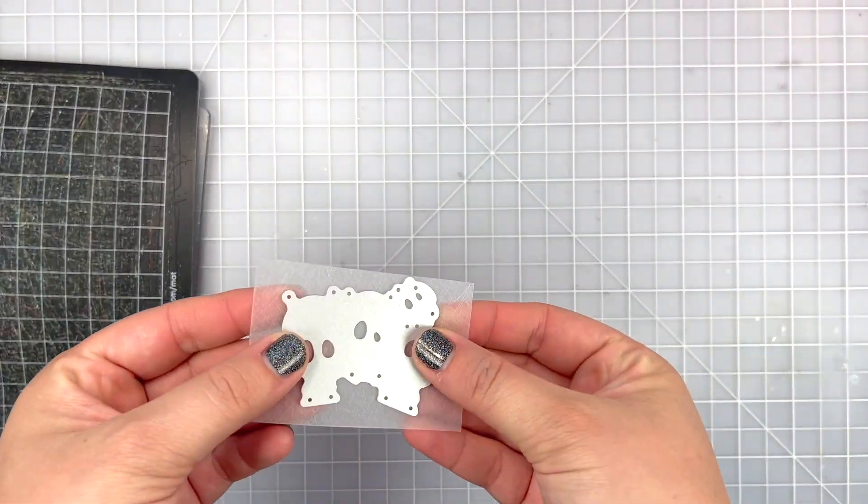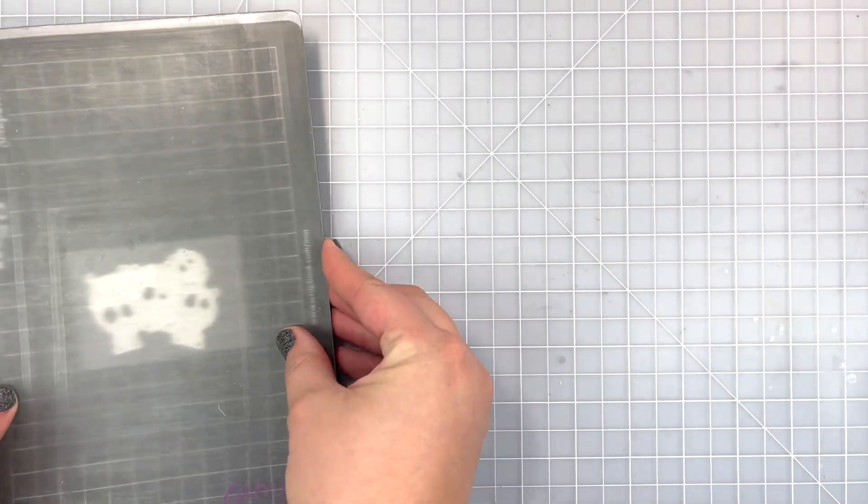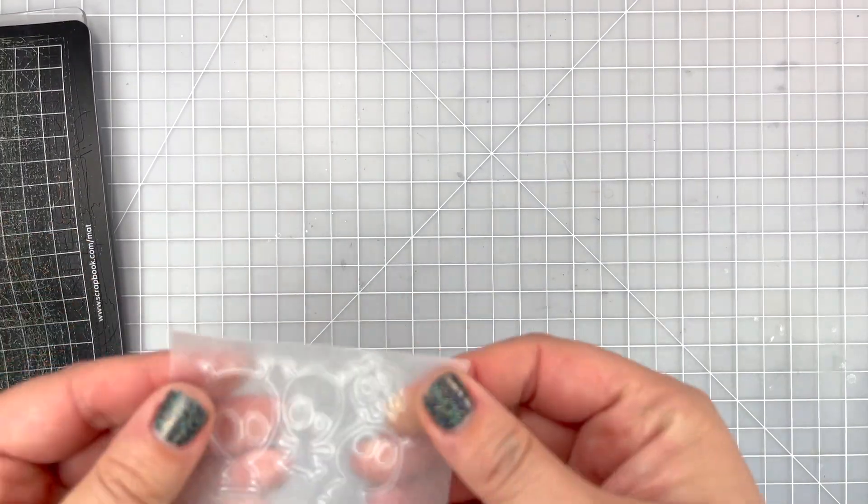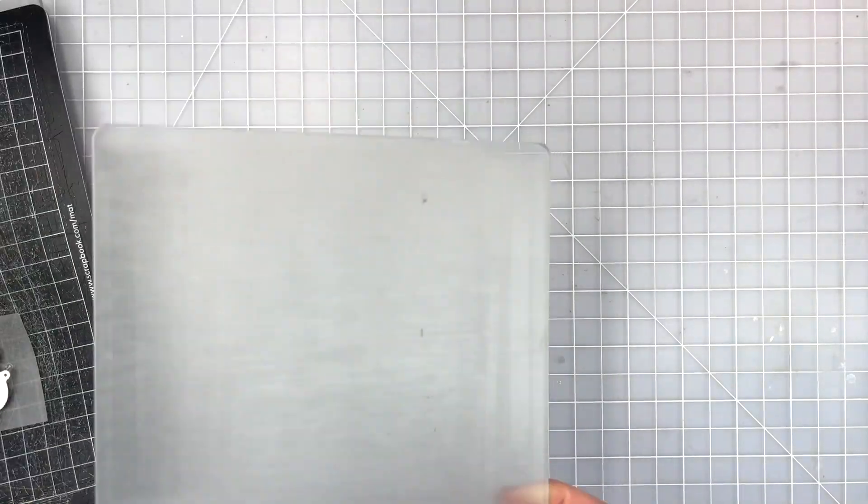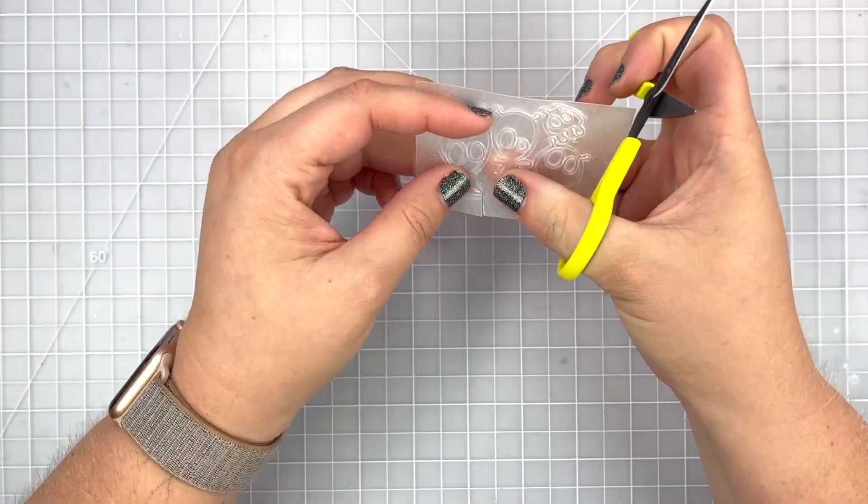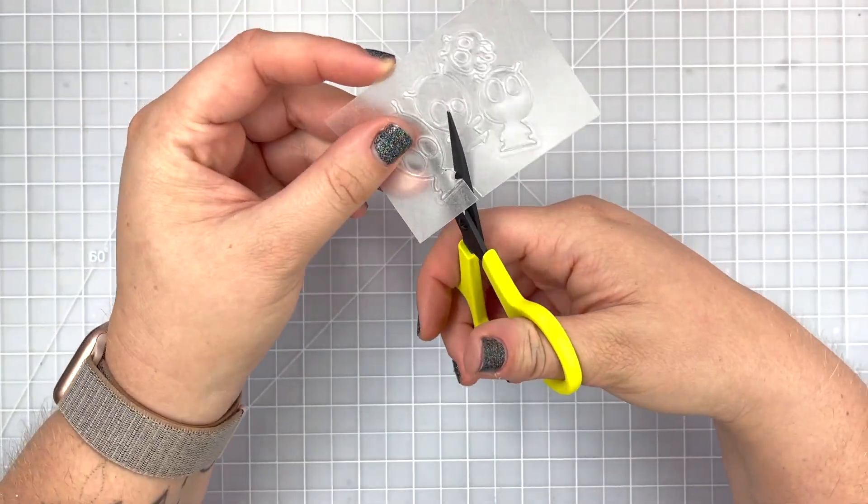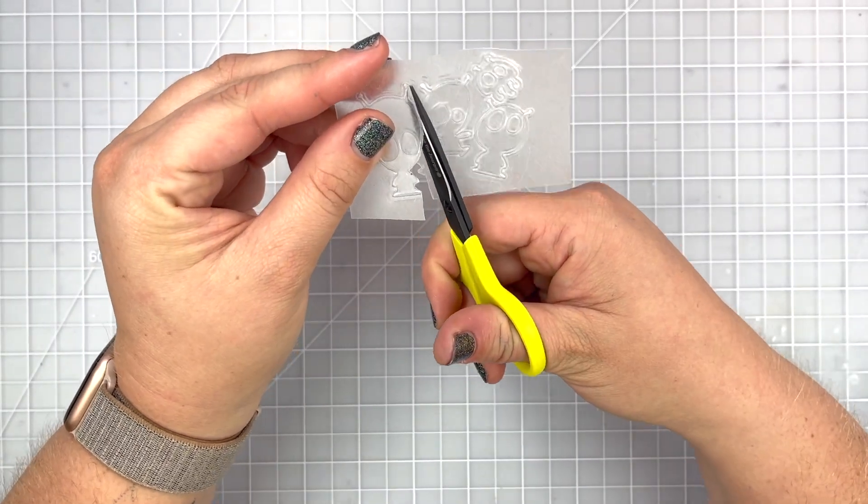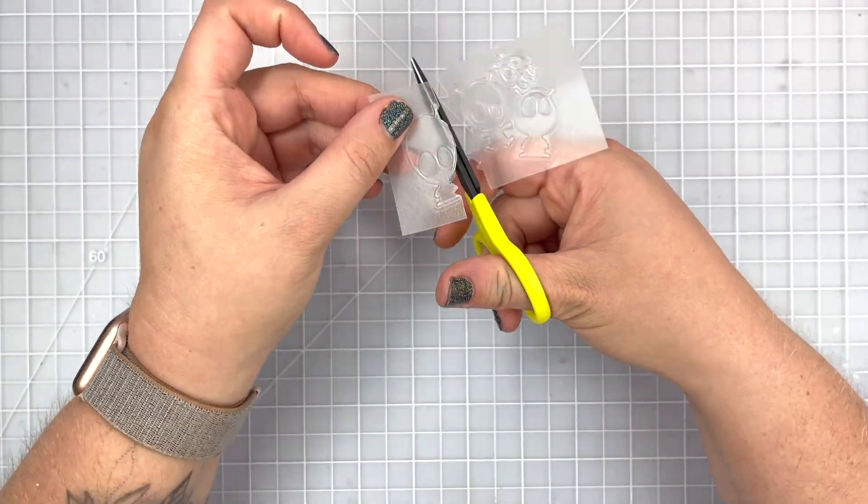The first thing I'm going to do is grab my Shrinky Dinks plastic. It has two sides - a shiny side and a more rough side. I'm going to die cut these with my Gemini Junior which adds a ton of pressure, but as you can see it still doesn't cut all the way through because it is plastic, not paper. If you try this yourself, I would just run it once through your die cutting machine and trim it out. It's really easy - you're just following the path and it cuts very easily because it's already kind of semi-cut from the steel die.